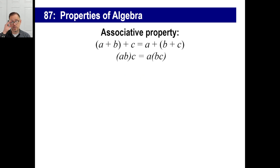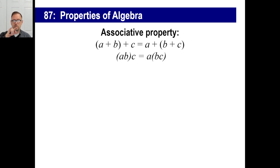Another property is the associative property, which means you can take a chunk of numbers strung in a row and associate whatever ones you want together. It doesn't matter what order you add things. Like 7 plus 3 plus 10 is the same thing as 7 plus 10 plus 3.